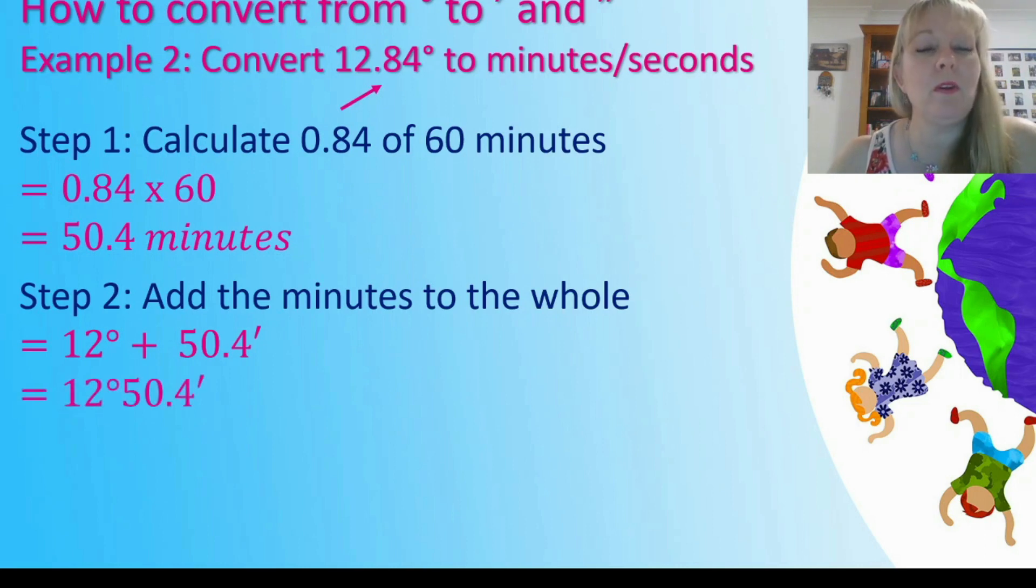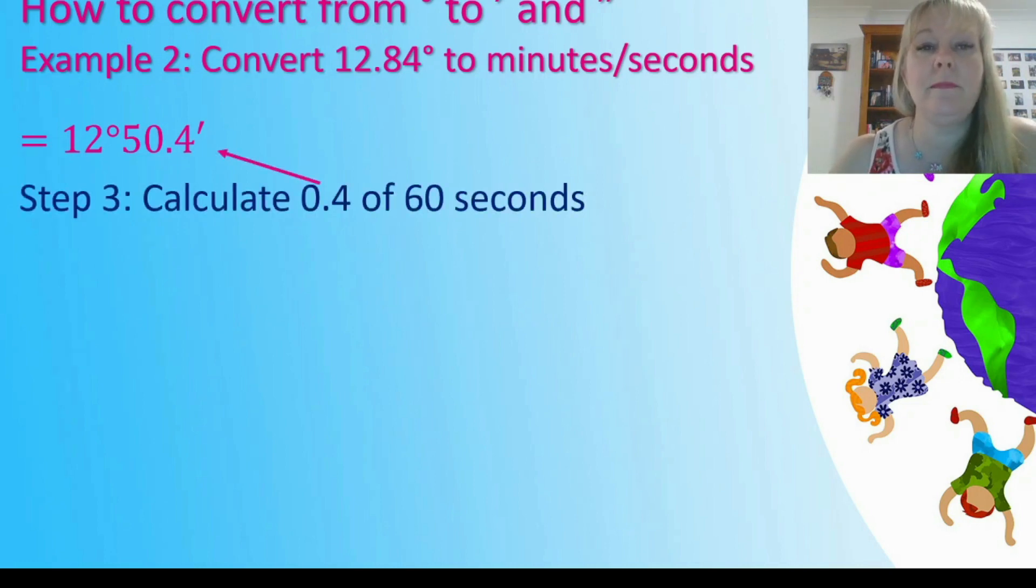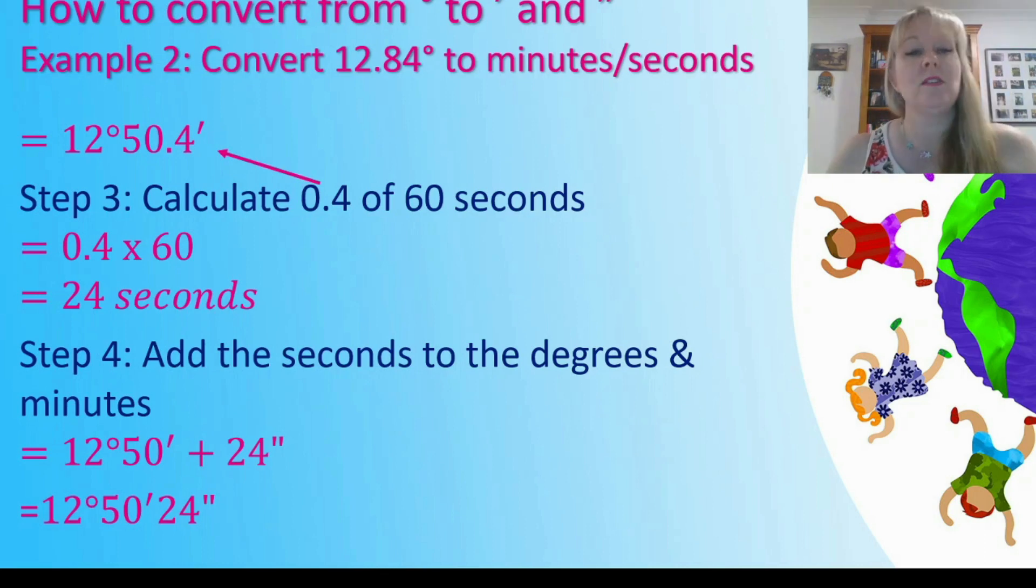Now I'm not quite there yet because I don't want any decimal places when presenting in minutes and seconds. I've got to convert this 0.4 part. What is that fraction of 60 seconds? 0.4 multiplied by 60 gives me 24 seconds. So I add the 24 seconds to the degrees and minutes and I end up with 12 degrees, 50 minutes, 24 seconds. It's actually easier going in this direction because I did it by 60 first and then by 60 again.